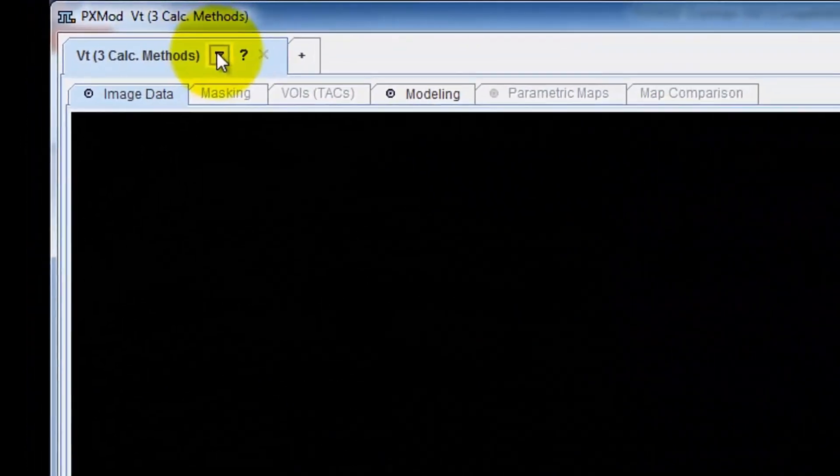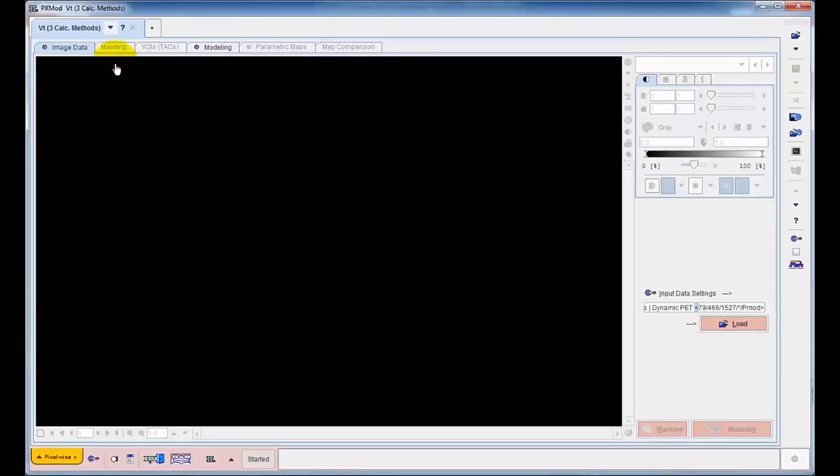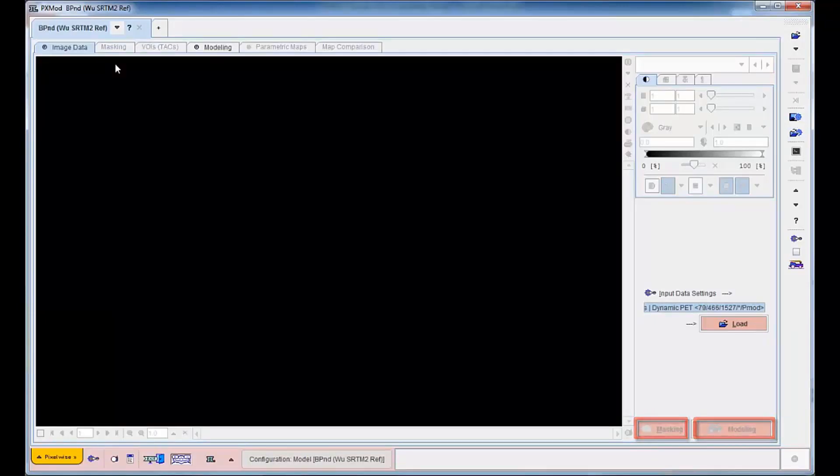The selection of the simplified reference tissue model 2 is the first processing step. From this point on, the step-by-step PXMOD workflow will be driven by the red action buttons in the lower right and run through a series of dedicated pages.